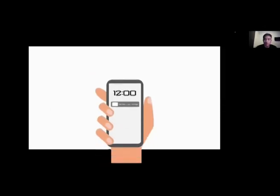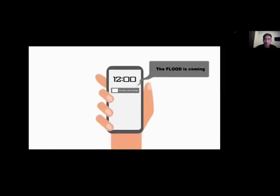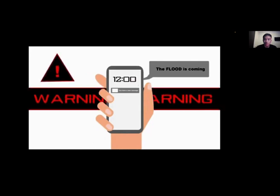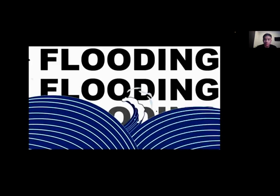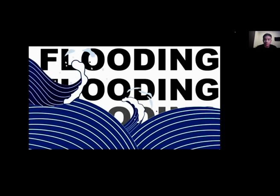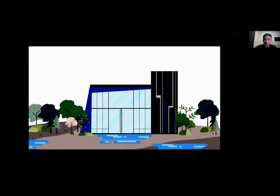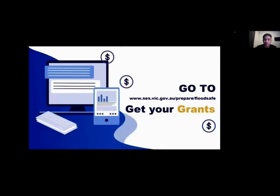The second part of the video shows users receiving warnings from the government before the flood, and in further design, this part will provide guidance to avoid emergency situations. The third part reminds users to stay high when flooding is happening. The fourth part is about returning home, and the last section teaches users how to apply for government grants.